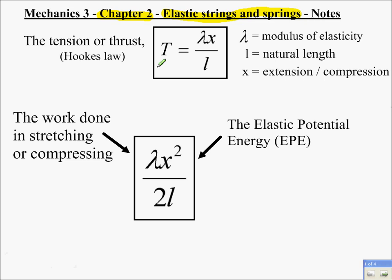Two key formulae you need. One is Hooke's law: tension T equals lambda x divided by l. And the second is the elastic potential energy, or work done in stretching or compressing the string. They're exactly the same thing: lambda x squared over 2l. So let's look at how we use these.